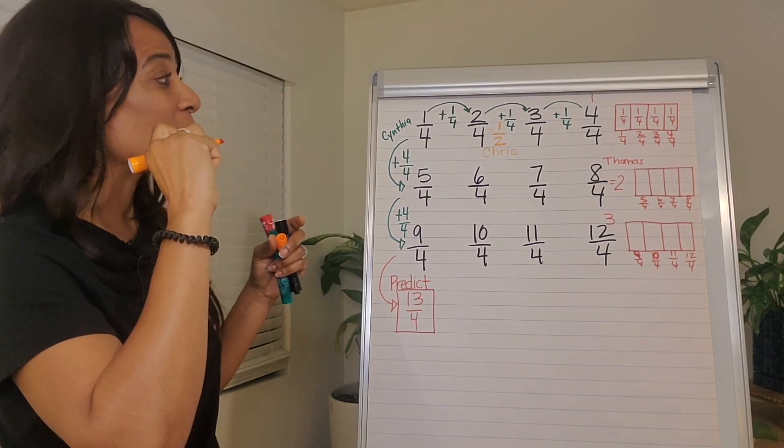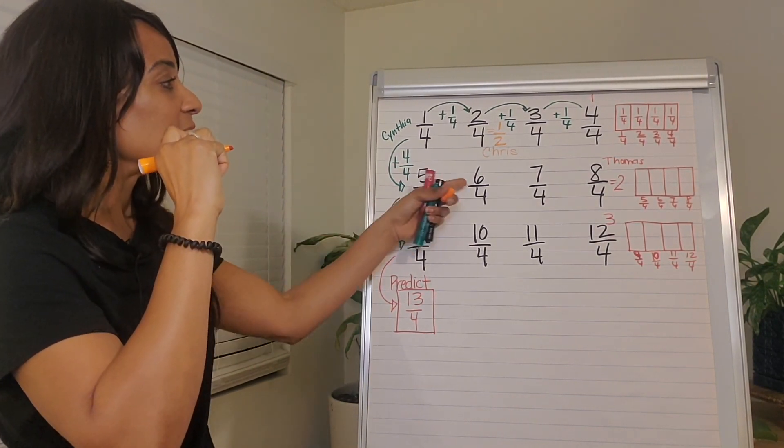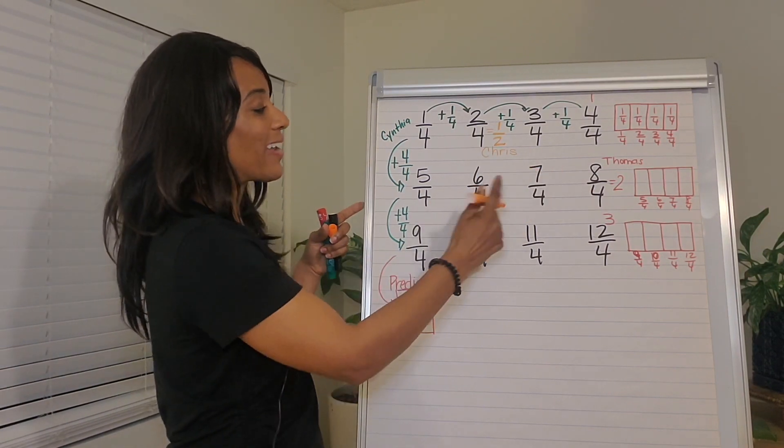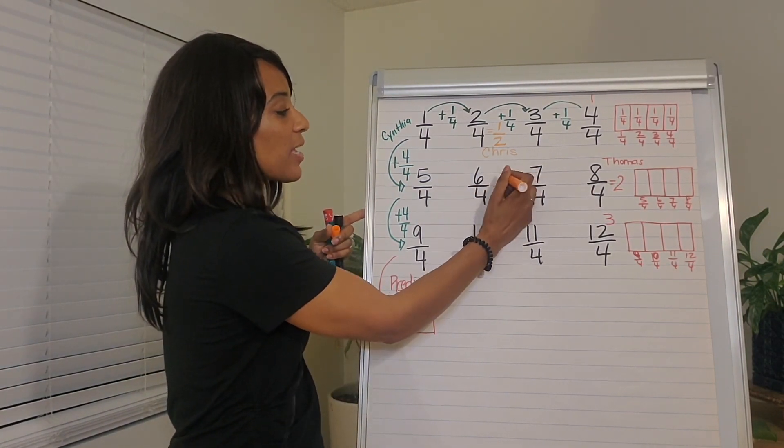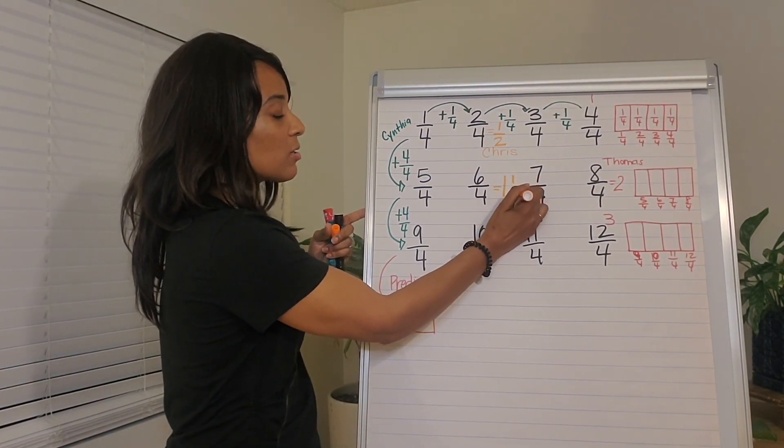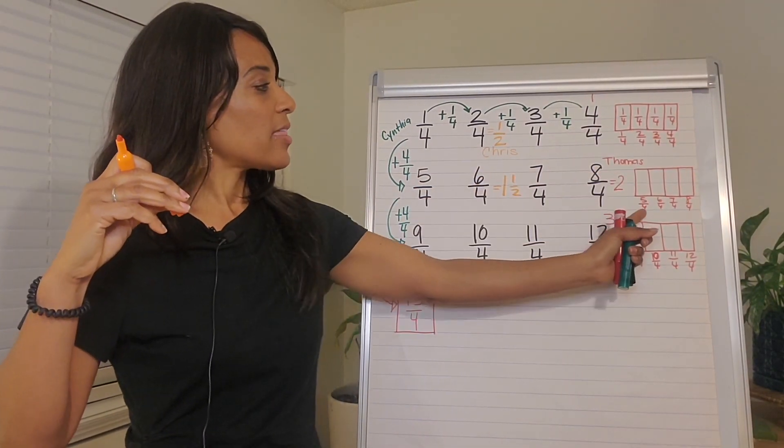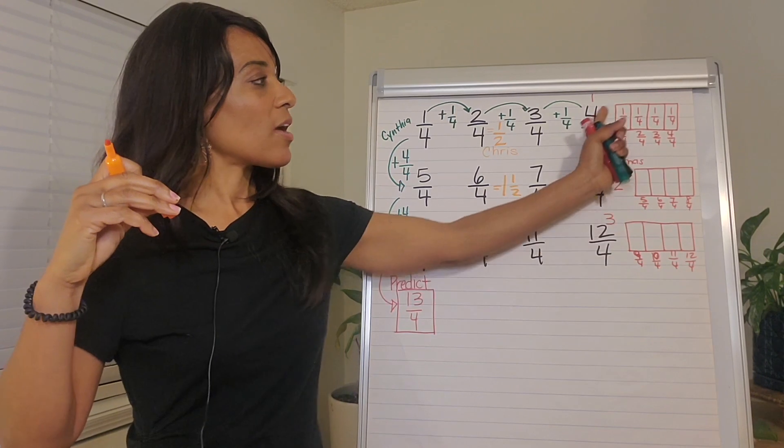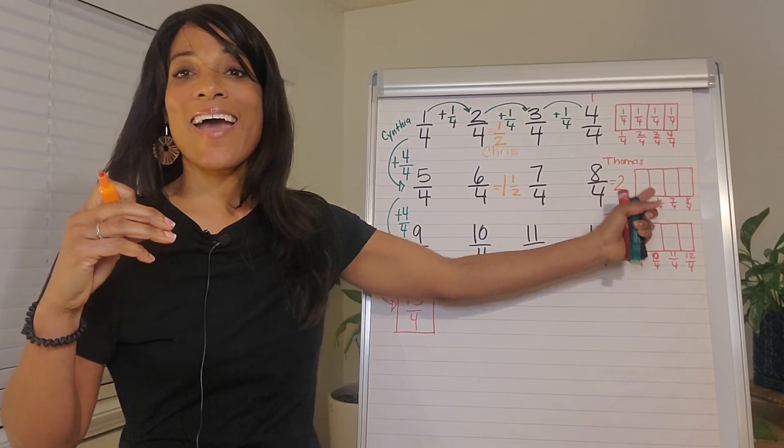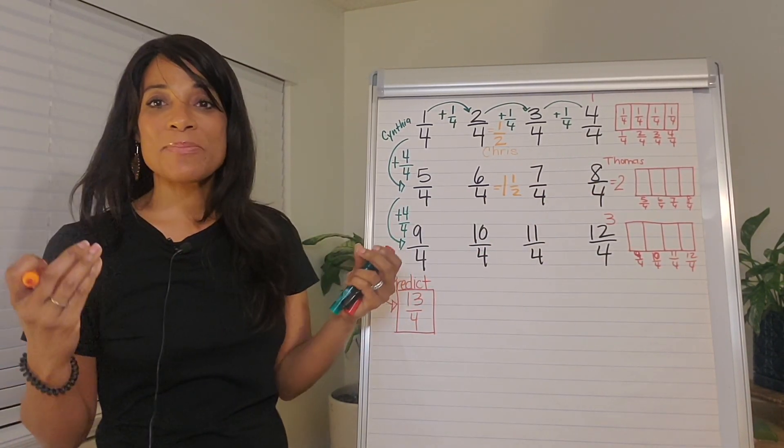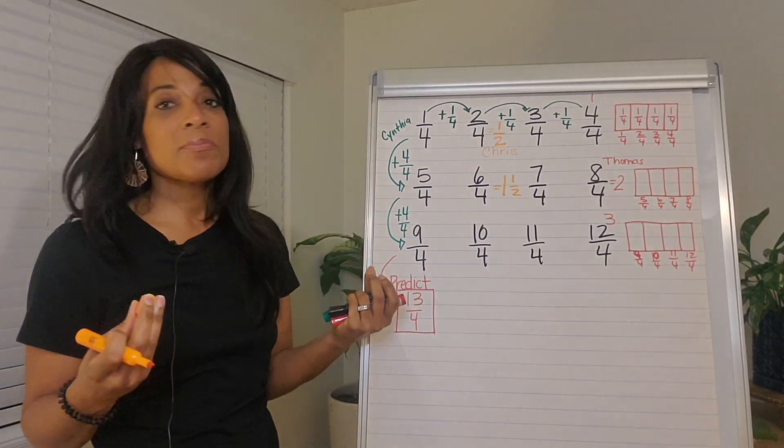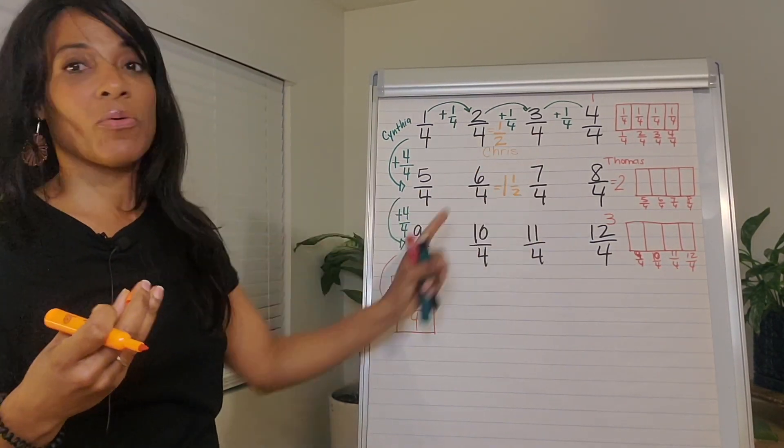Other kids might say, well, six fourths is one whole and a half. So I'll say, is that true? Let's look at our chart. Here we have four fourths is a whole. And then if we get to six fourths, we have one whole and a half, right? So some kids will see it with numbers. Some kids will see it with the model. We want to have both.